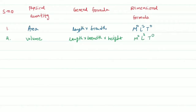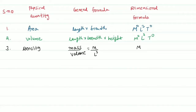The third quantity is density. Density is mass per unit volume — the amount of mass occupied per unit volume. So density equals mass divided by volume, giving M power 1, L power minus 3, T power 0.